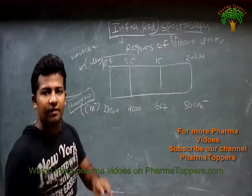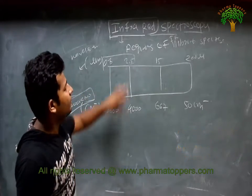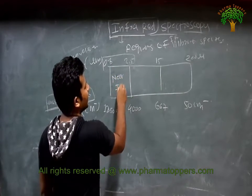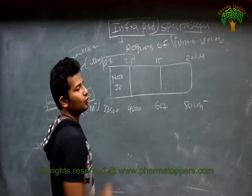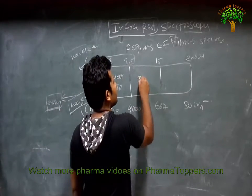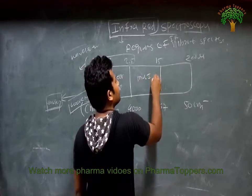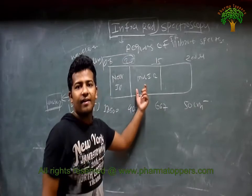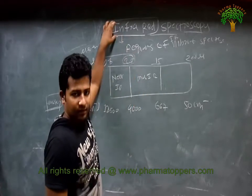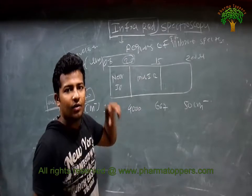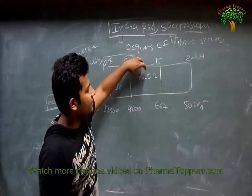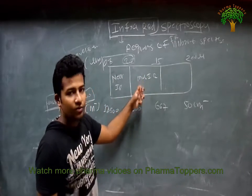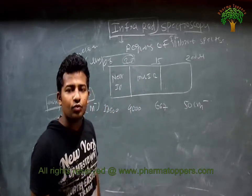Now we see there are mainly 3 types of regions in IR. Near IR is between 0.8 to 2.5 microns. Mid IR is between 2.5 to 15 microns. This mid IR is the most commonly studied region — our IR spectra are located in this region, between 2.5 to 15 microns.